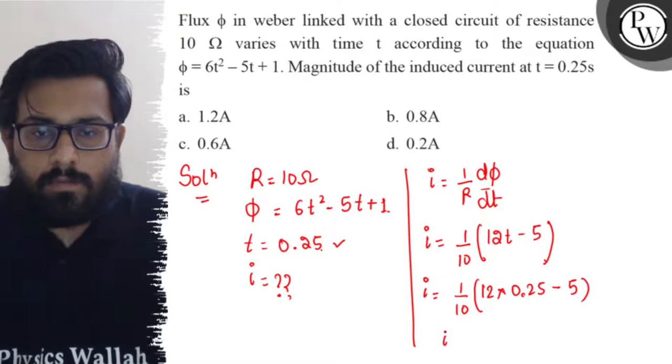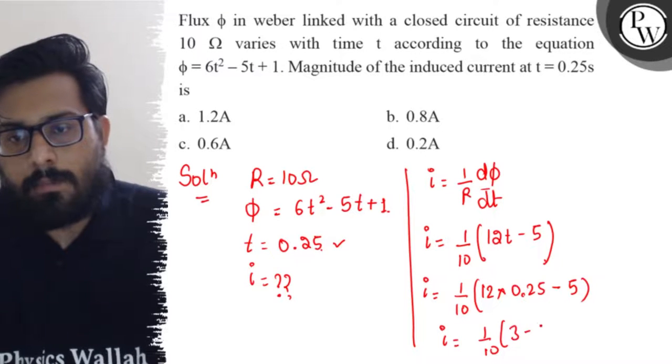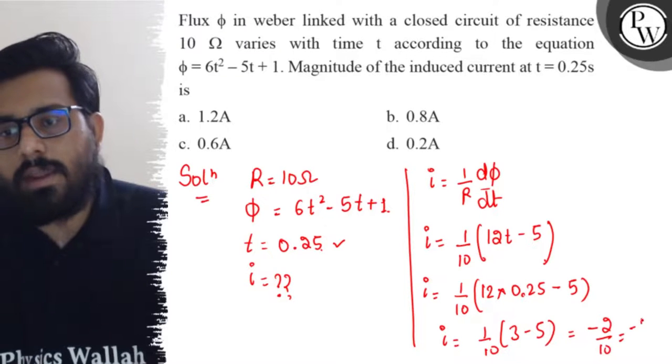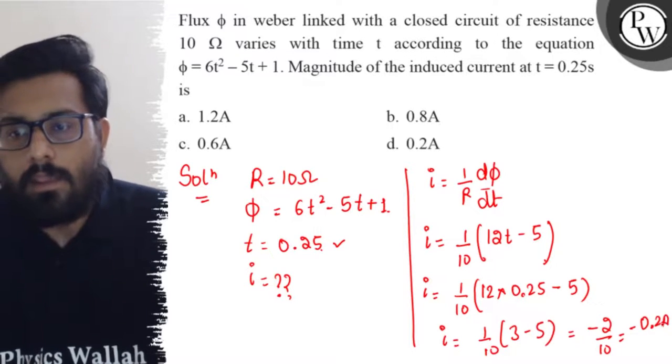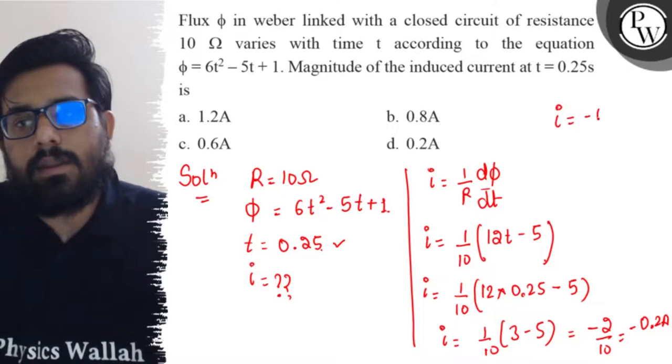So solving it all again, 1/10 × (3 - 5), so your answer will be -2/10 or you can say -0.2 ampere. Now our answer is -0.2 ampere.